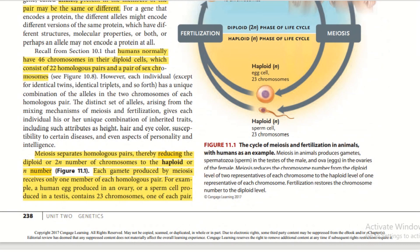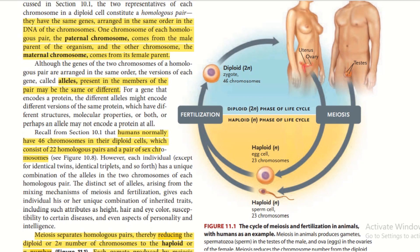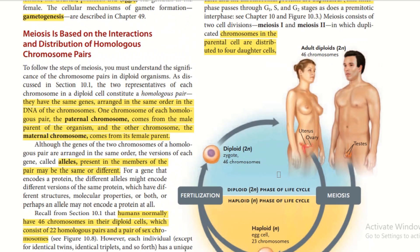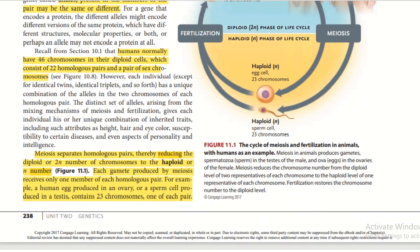The cycle of meiosis and fertilization in animals: meiosis produces gametes — spermatozoa in the testes of males and ova in the ovaries of females. Meiosis reduces the chromosome number from the diploid level of two representatives of each chromosome to the haploid level of one representative. Fertilization restores the diploid chromosome number. Understanding this diagram will allow you to explain how and why this works. Meiosis is based on the interaction and distribution of homologous chromosome pairs.